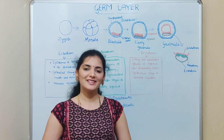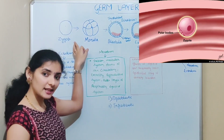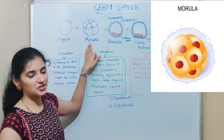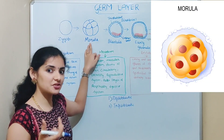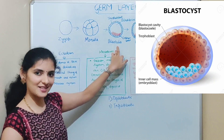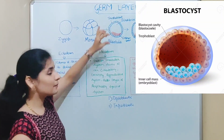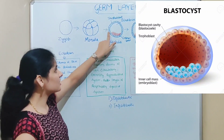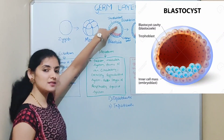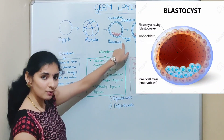Development begins with the single cell called the zygote. This zygote undergoes division or cleavage to form a mass of cells called the morula. Morula cells are undifferentiated — they do not have specialized structure or function. The morula undergoes further division to form the next stage called the blastula. Differentiation begins in the blastula stage, where the outermost cells become flattened and form the trophoblast, while the cells inside form the embryoblast or inner cell mass, with a fluid-filled cavity called the blastocoel.